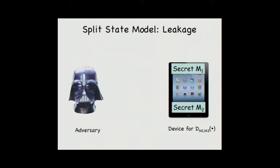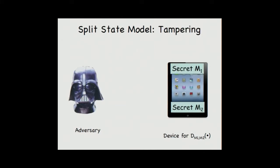More concretely, in this model, the adversary needs to specify two functions G1, G2, and he can get G1 of M1 and G2 of M2 for leakage. Similarly for tampering, he needs to specify two tampering functions and he can replace with F1 of M1 and F2 of M2. Previously, Dziembowski et al. identified and constructed a very powerful primitive called non-malleable code and show how to use non-malleable code to protect from tampering attacks.